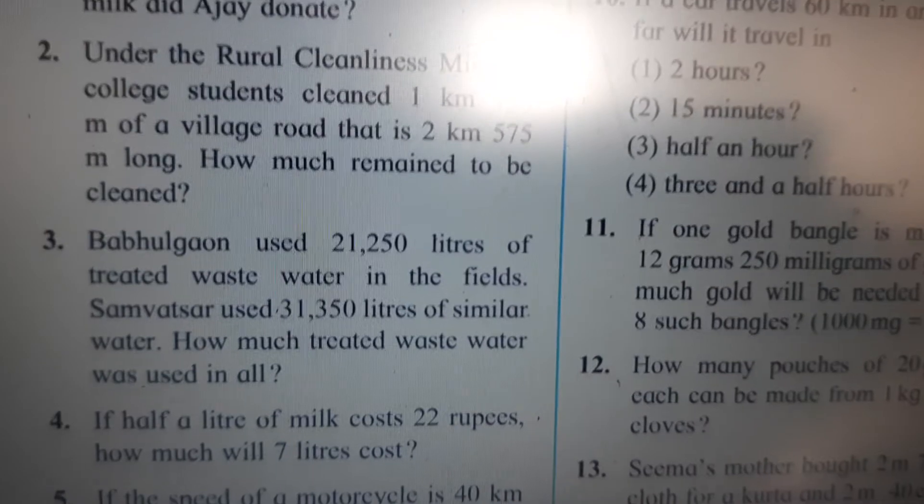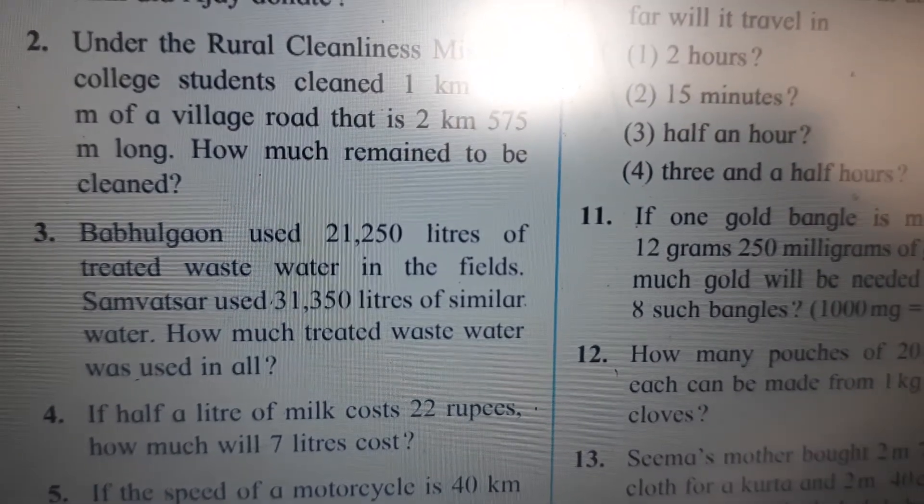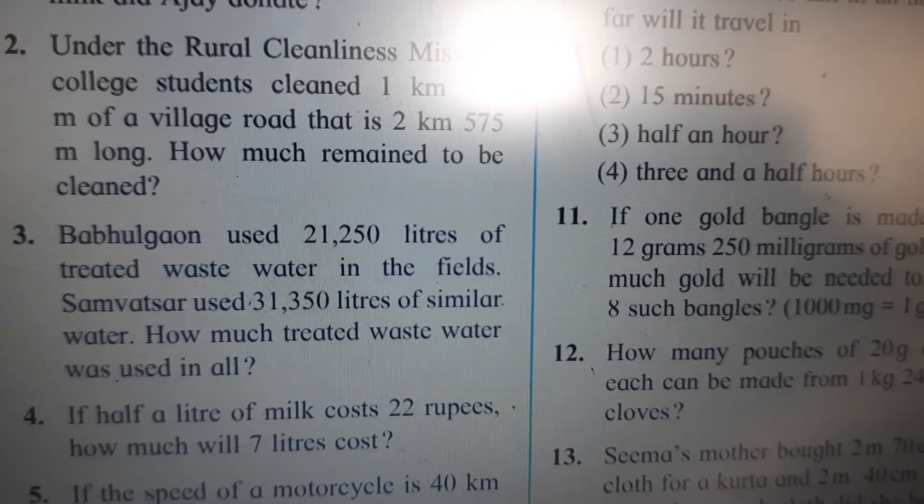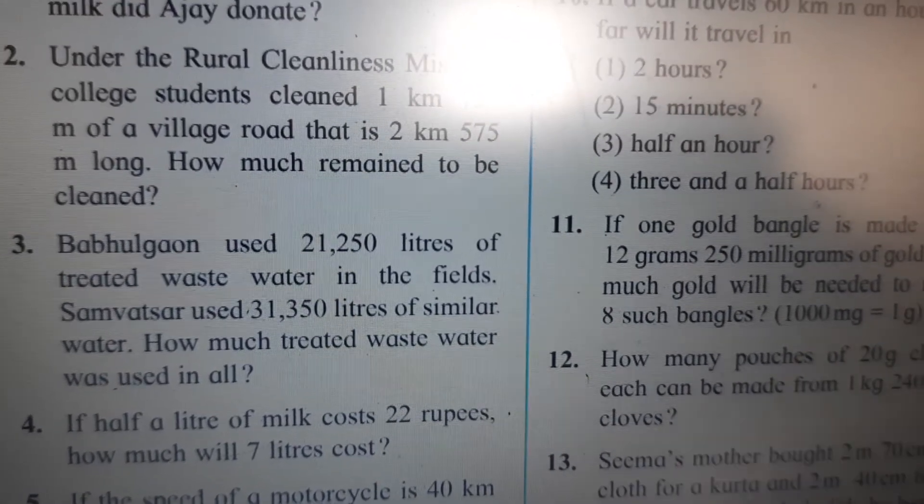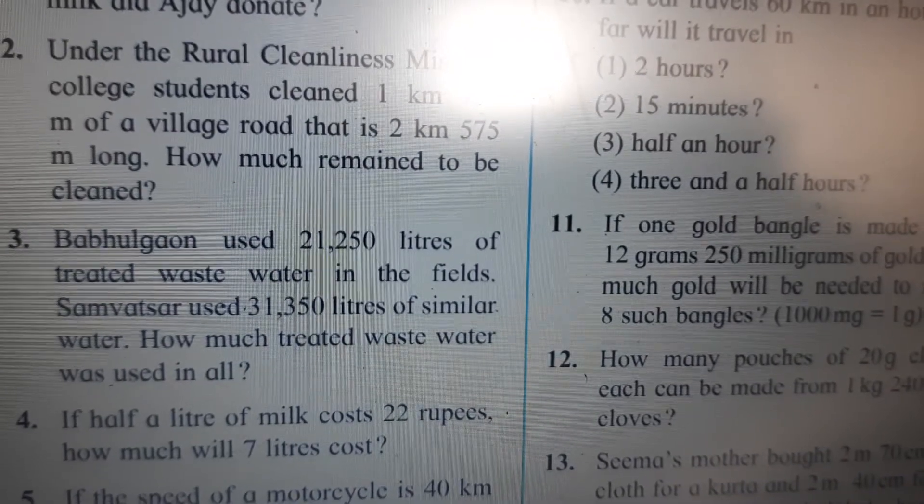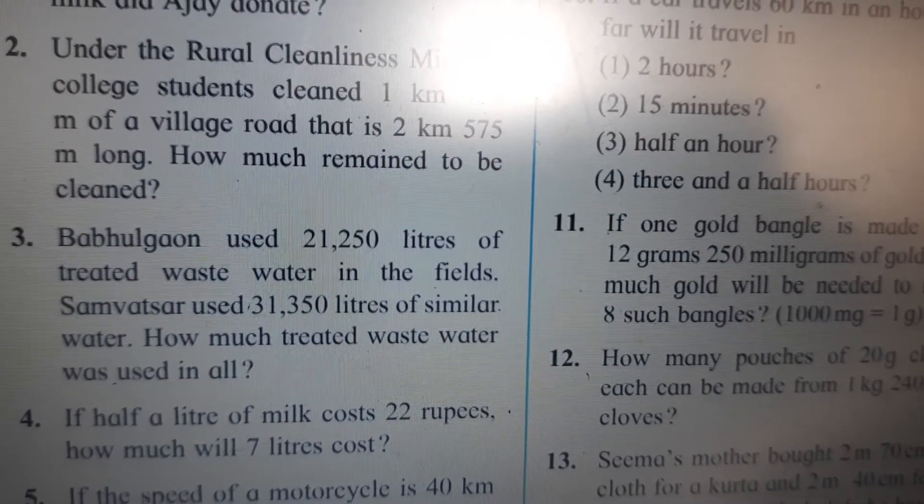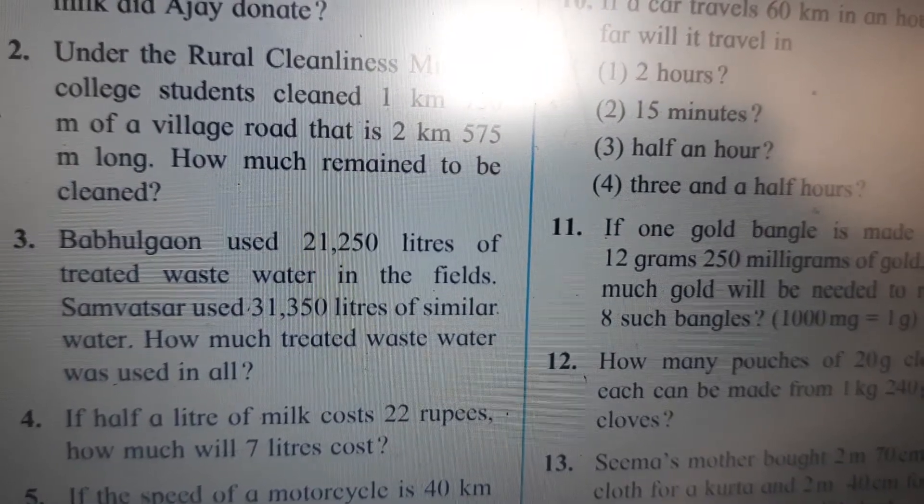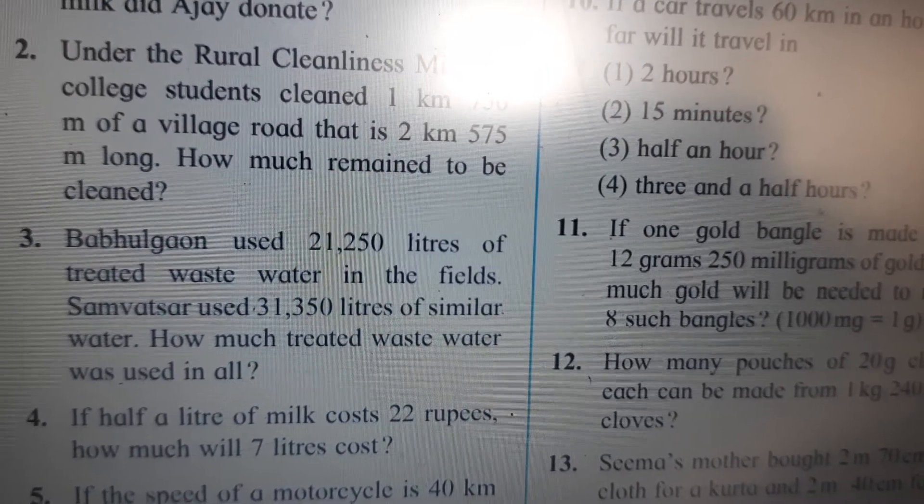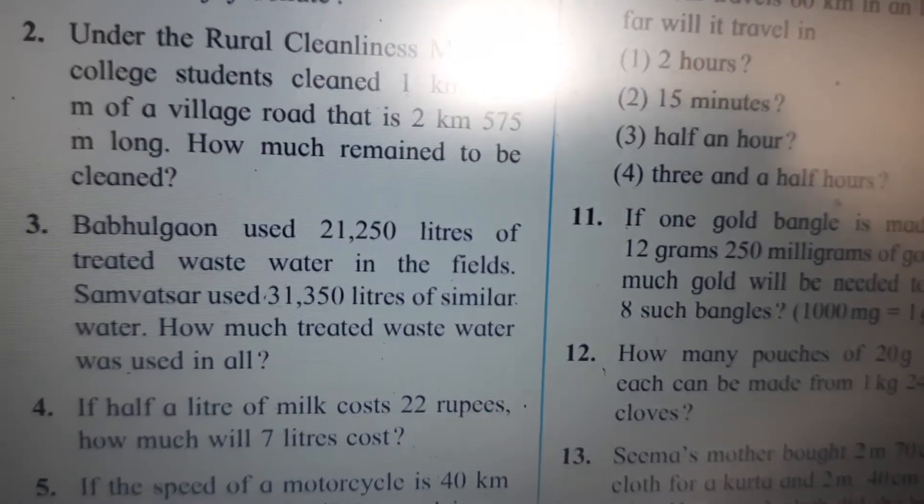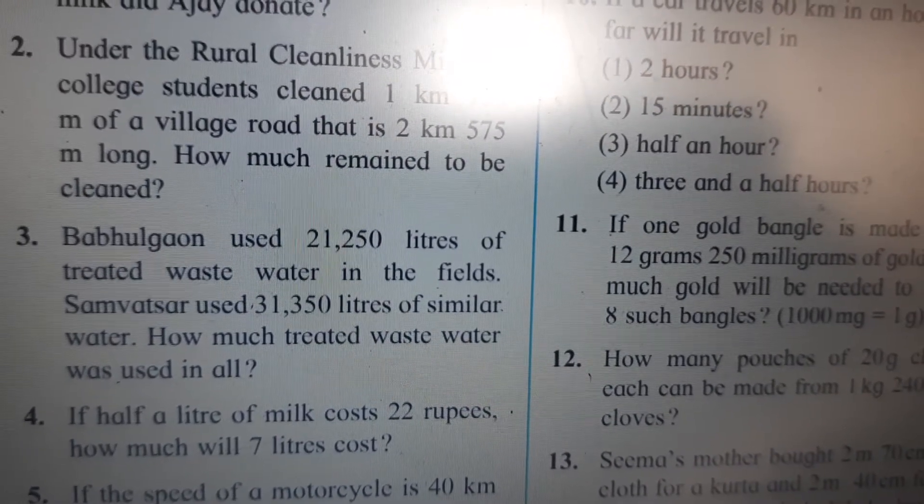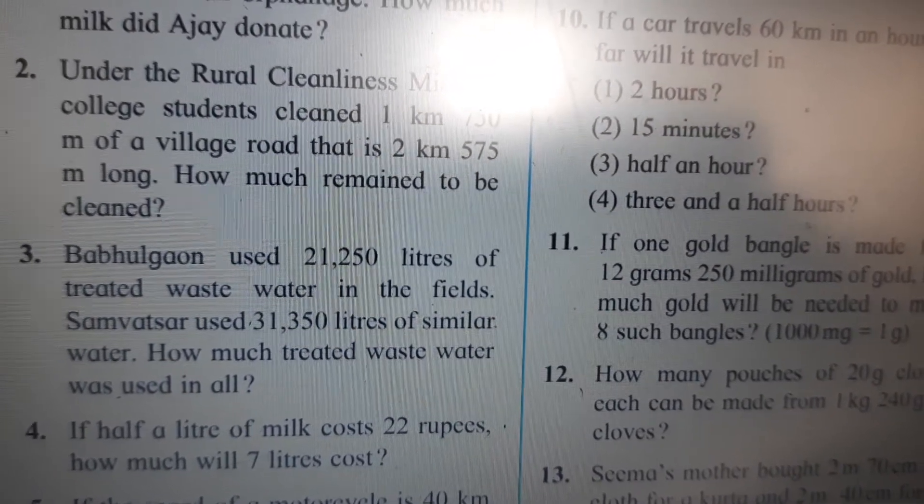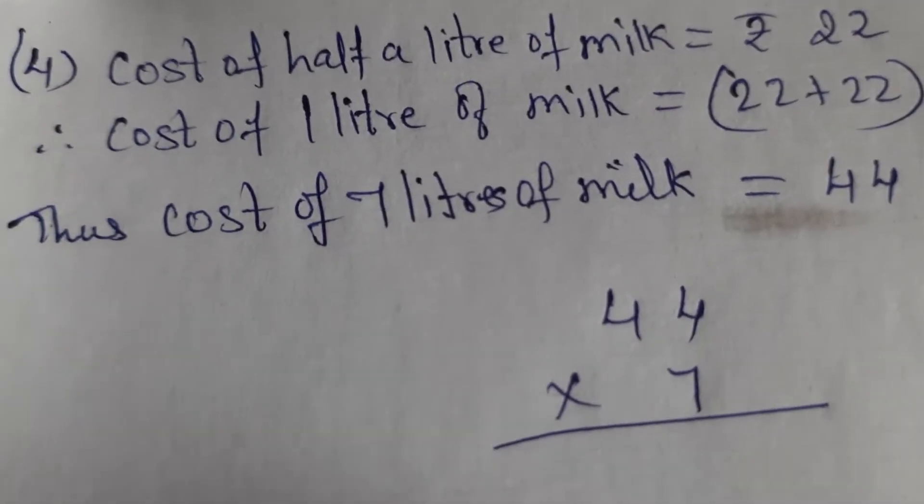Now third sum you got to do it for homework. That's again an addition sum children. You can see that bubble gum used 21,250 liters of treated waste water in the field. Somewhat sir used 31,350 liters of similar water. How much treated waste water was used in all? So you have to add them. Correct? So total quantity treated waste water you will find out. So I will solve the fourth one. If half a liter of milk cost 22 rupees, how much will 7 liters cost? Okay. Let's find out.